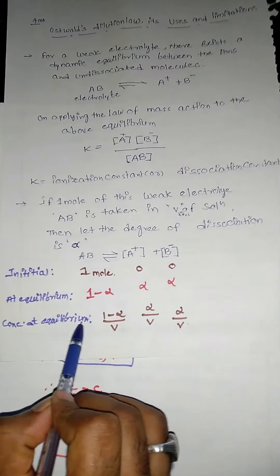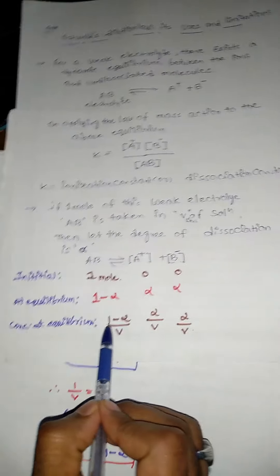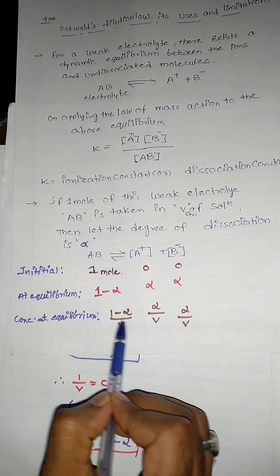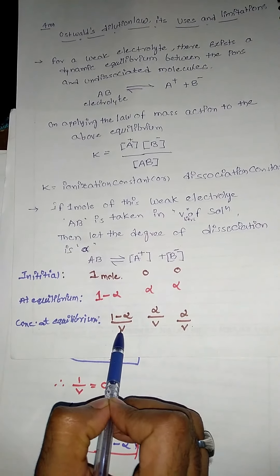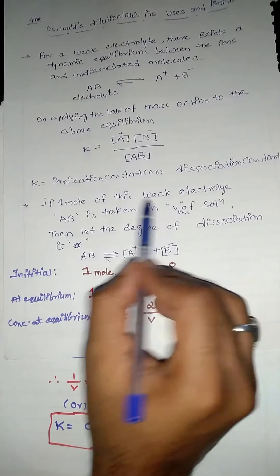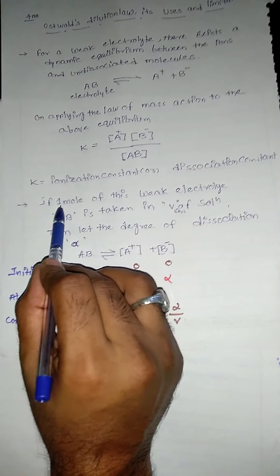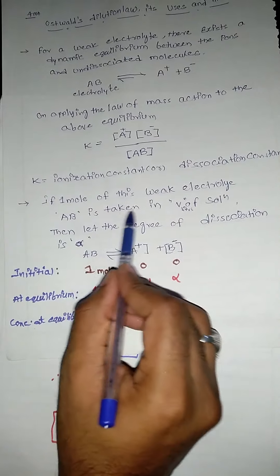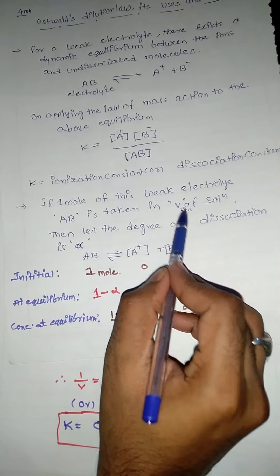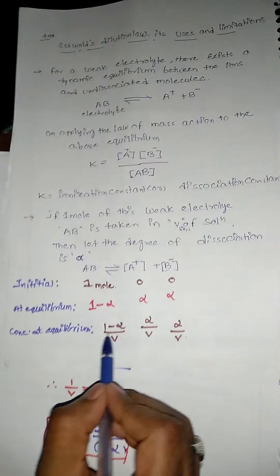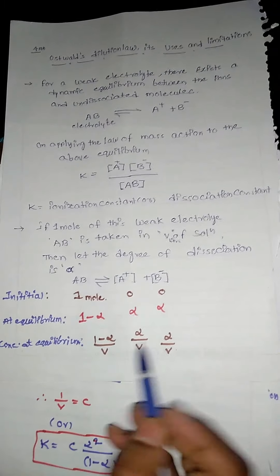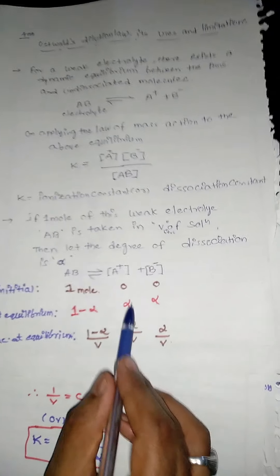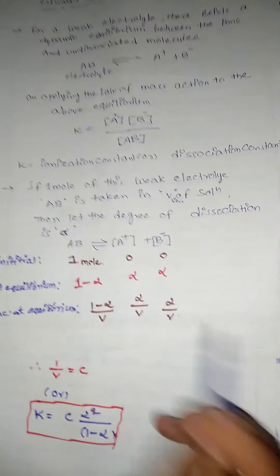Concentration at equilibrium: AB = (1 − α)/V, since 1 mole of weak electrolyte AB is taken in V liters of solution. Similarly, [A⁺] = α/V and [B⁻] = α/V.